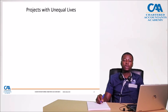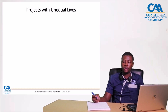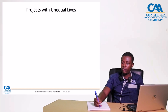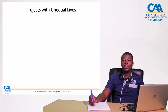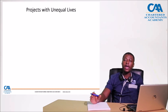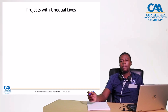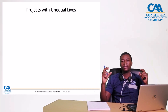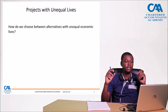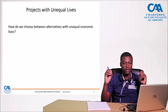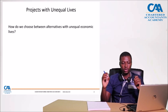To start off — projects with unequal lives. What are these? I can have Project A and Project B. Project A can have an economic life of four years, and Project B can have an economic life of six years. These projects are mutually exclusive — remember the concept of mutually exclusive. If I accept A, I cannot accept B. But from an evaluation perspective, because these projects have unequal lives, I cannot automatically compare them. I need to take into account the differences in their economic lives.